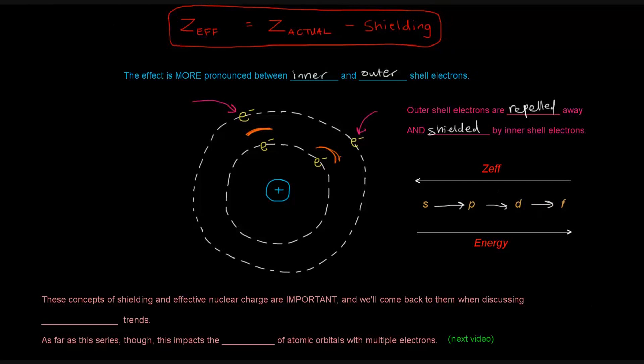The effective nuclear charge increases going to the left, because the electrons are more likely to be closer to the nucleus in those types of orbitals, in the S orbitals.